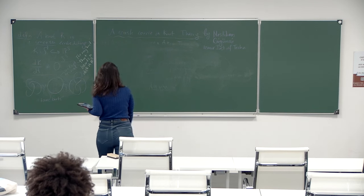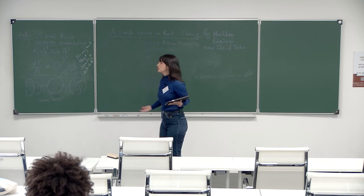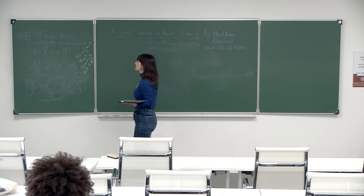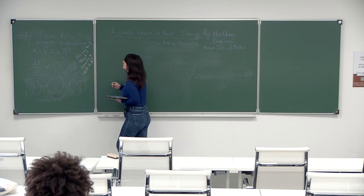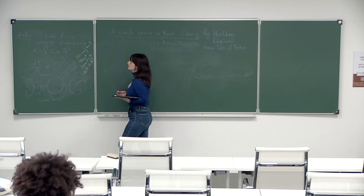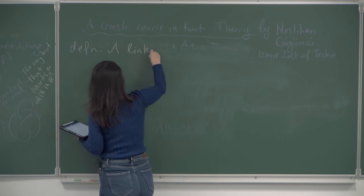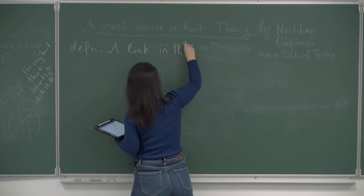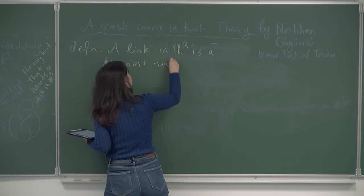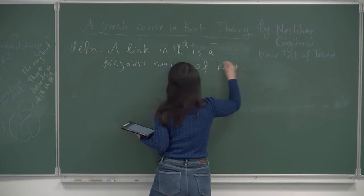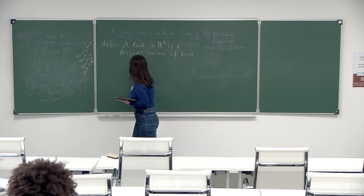We can extend our domain to contain more circles. If the domain consists of a disjoint union of some number of circles, then in the image we'll have a disjoint union of knots, and these objects are called links. A link in R³ is a disjoint union of knots. Every knot is a link with one component.